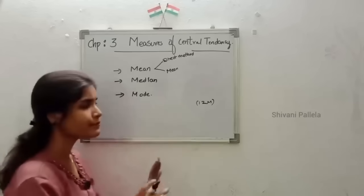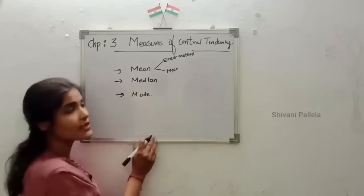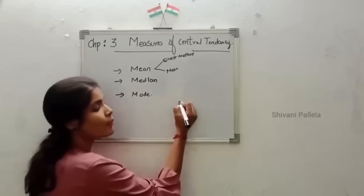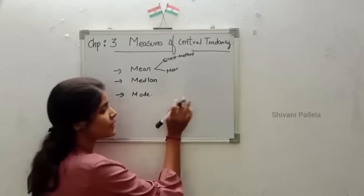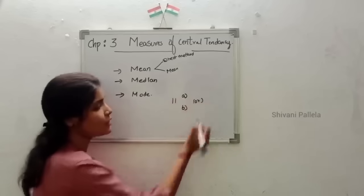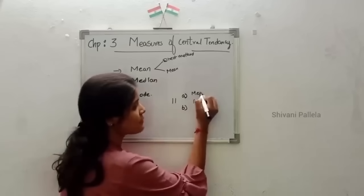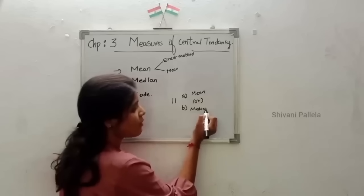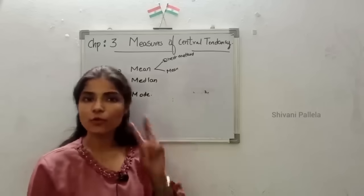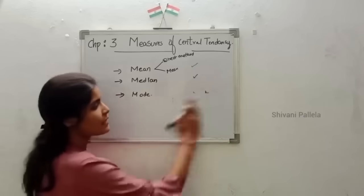In Unit 3 you are having 3 methods: mean, median, and mode. From Unit 3, questions 8, 9, and 10 - Level A and Level B - are from Unit 3. You will have an OR option. You are having only 3 topics. If they are asking mean, they will ask median as the OR option; if they ask mode, then median will be the other option.